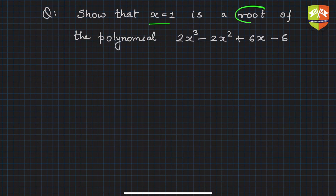The question is: show that x equals 1 is a root of the polynomial 2x³ - 2x² + 6x - 6. How do we prove this or show that x equals 1 is a root or zero of the polynomial? Basically, this is the solution.